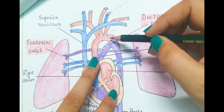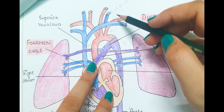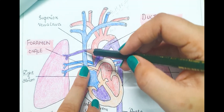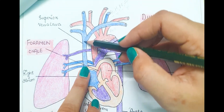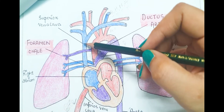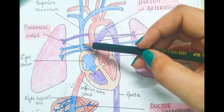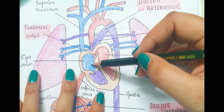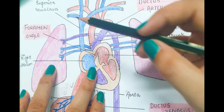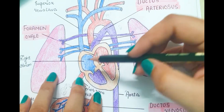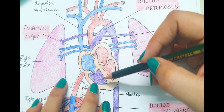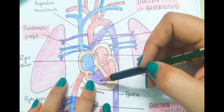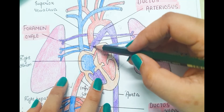After circulation, deoxygenated blood from the brain, heart, neck, and arms enters the superior vena cava, which carries it into the right atrium. Most of the blood arriving from the superior vena cava passes from the right atrium to the right ventricle, and from the right ventricle this less-oxygenated blood enters the pulmonary artery.